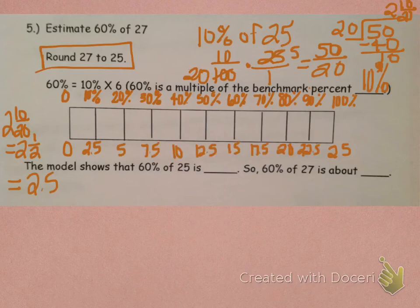So, here is our bottom. 2.5, 2.5 times 2 is 5. 2.5 times 3 is 7.5, so on and so forth. So, the model shows that 60% of 25 is, well, let's look. There's 60%, it is 15. So, 60% of 27 is about 15.